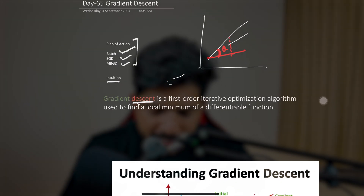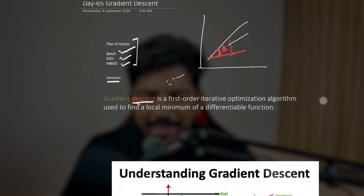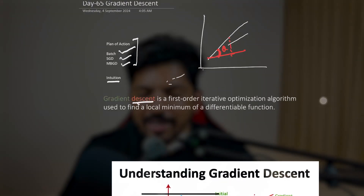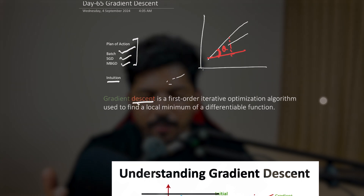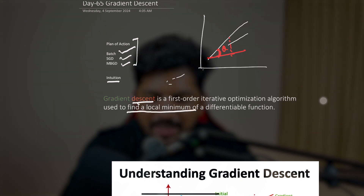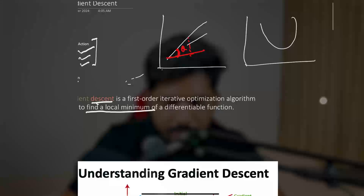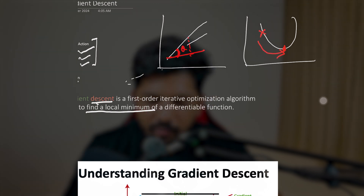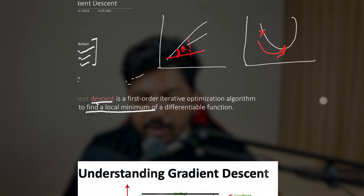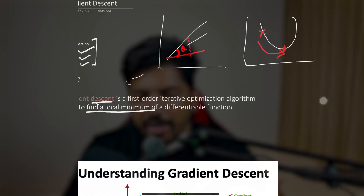So let's repeat this definition. Gradient descent is a first order iterative optimization algorithm. First order means we use the first order derivative. Iterative means it will repeat again and again — like a for loop. Optimization means to reduce the loss. And it is used to find the local minimum. Let's say initially it is here, then it is trying to find this point — the local minimum. And one more important thing: it should be a differentiable function. So these are the key words to keep in mind when dealing with gradient descent.